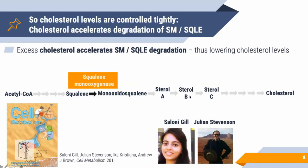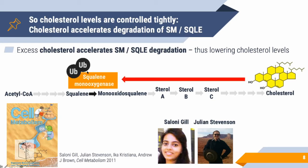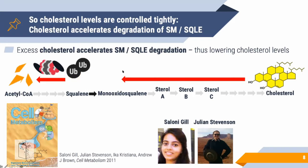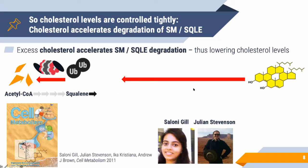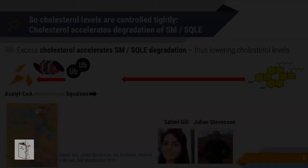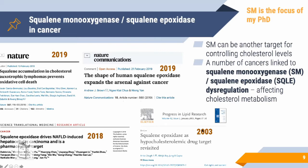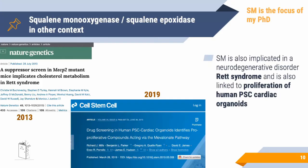With excess cholesterol, squalene monooxygenase gets ubiquitinated and triggered for degradation, shutting down cholesterol production. This is a nice feedback mechanism. The enzyme has been studied for decades — initially for lowering cholesterol levels — and in recent years there have been major papers linking it to cancer metabolism, Rett syndrome, regeneration of human blood stem cells, and cardiac organoids.